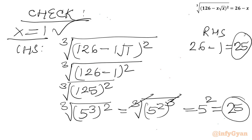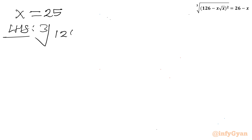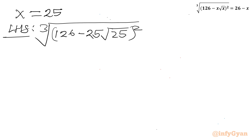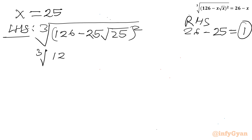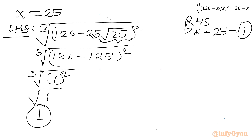For x = 25: LHS = (∛(126 - 25·√25))² = (∛(126 - 125))² = (∛1)² = 1² = 1, and RHS = 26 - 25 = 1. LHS equals RHS, so x = 25 is also a verified solution.